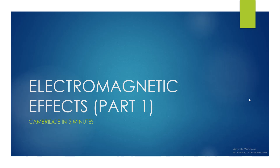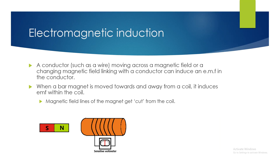Welcome to another IGCSE physics revision video. Today we're going through the first part of the topic of electromagnetic effects. Electromagnetic induction is the phenomenon where a conductor such as a wire moves across a magnetic field, or where a changing magnetic field is within the vicinity of a conductor, inducing an EMF or voltage across that conductor. For example, when a bar magnet is moved towards and away from a coil, it will induce an EMF within the coil, because the magnetic field lines of the bar magnet become cut by the coil as the magnet moves in and out, producing a brief reading on a sensitive voltmeter.